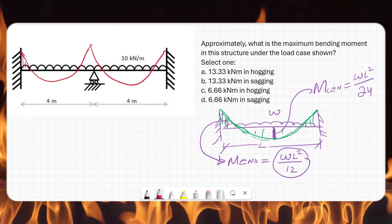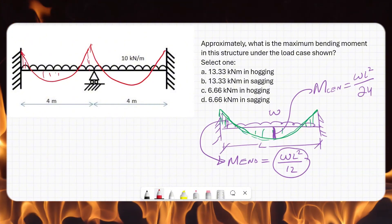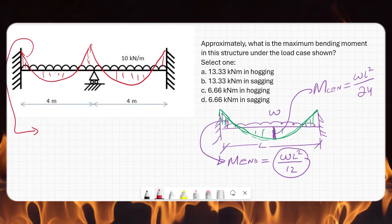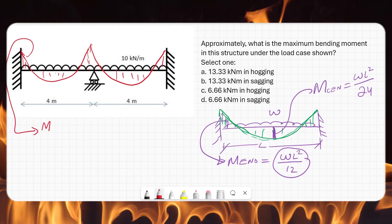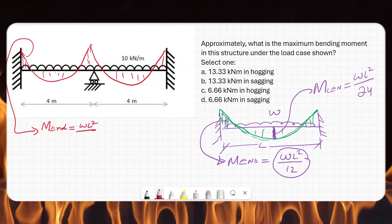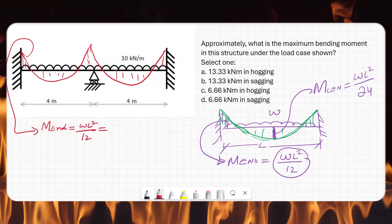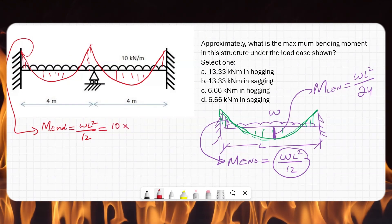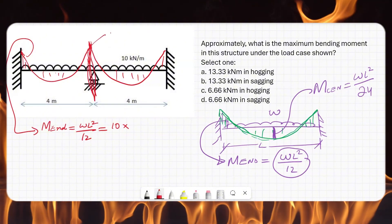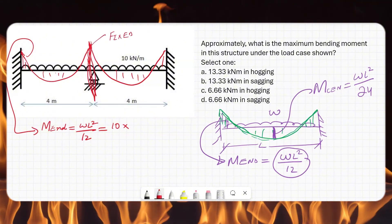So it will have hogging and it will have a sagging moment as well. The formula for this is M equals—this is towards—wl²/12. w is 10, and if I treat it as a single span